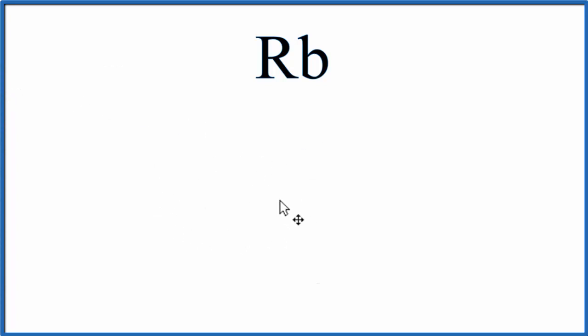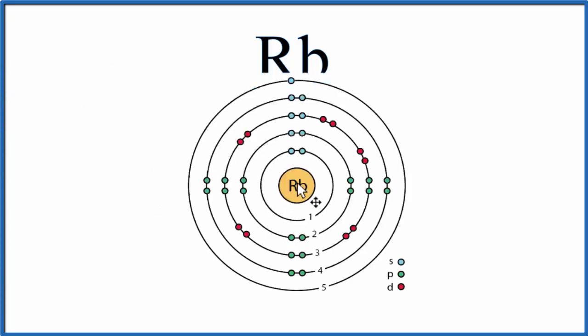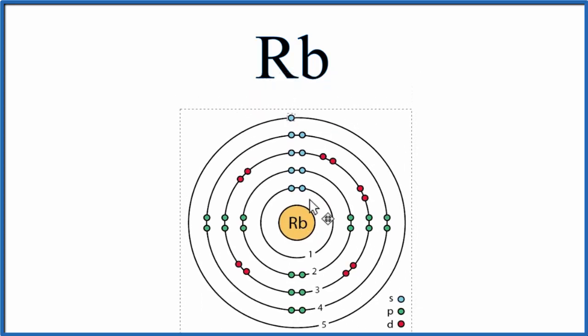So if we were to draw the Bohr diagram for Rb as it's found on the periodic table, it looks something like this. Each of these shells is an energy level, and we can see in this last energy level there's only one valence electron.